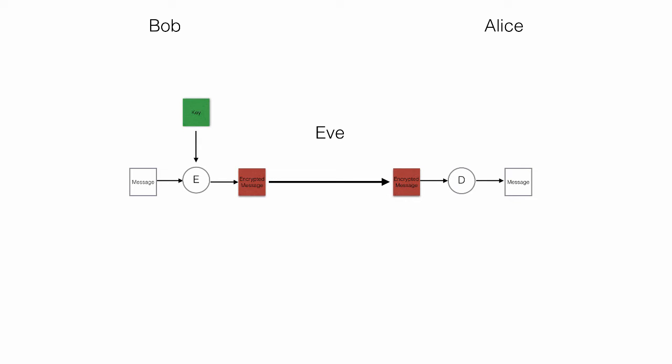To encrypt anything we need a key, so Bob creates a key — a secret password. His secret password is mysecretkey2015. In order for Alice to decrypt the message she needs to have the same key. With any other key she will not be able to decrypt the message.